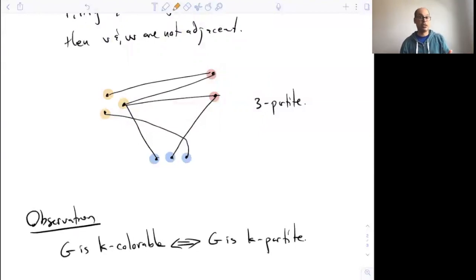Such that things of the same color or same part can't be adjacent, which is the definition that we just gave. So that is just another perspective on the notion of colorability.